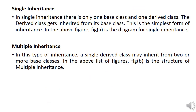To summarize the forms of inheritance: single inheritance has only one base class and one derived class. Multiple inheritance means a single derived class gets inherited from two or more base classes. Hierarchical inheritance means two or more classes are derived from a single base class. Multi-level inheritance is a chain where each derived class also acts as a base.